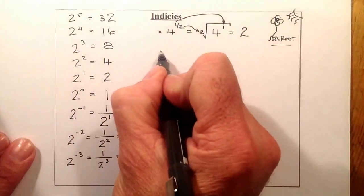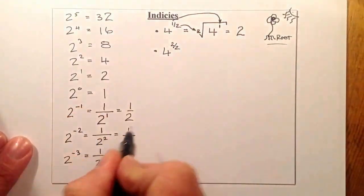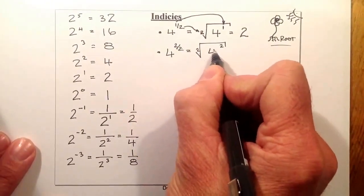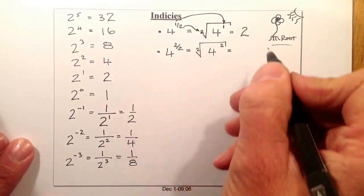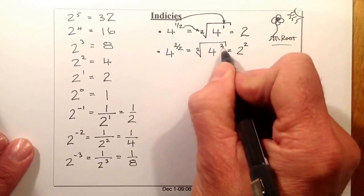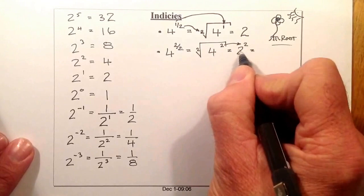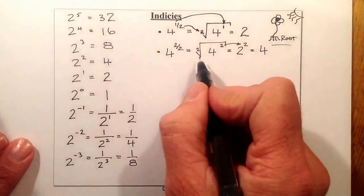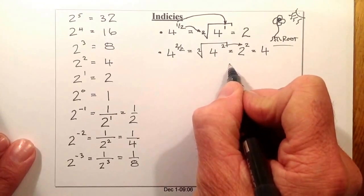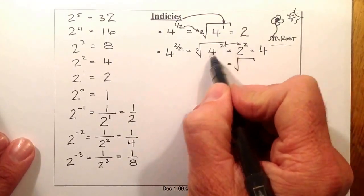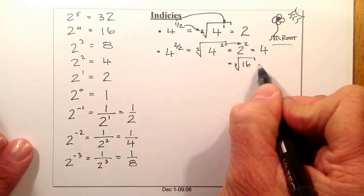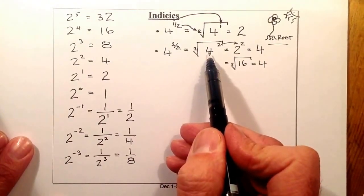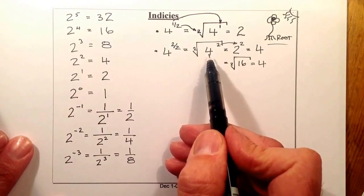Let's look at 4 to the power of 2 over 2. In root form, the 2 on the bottom goes to the root sign, the 2 on top is the power, and 4 is inside. Take the square root of 4 first, which gives 2, then raise it to the power of 2 — giving 4. You could also take the power first to get 16, then the square root gives 4. It's usually easier to take the root first to keep numbers smaller.